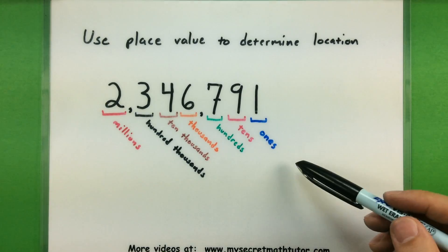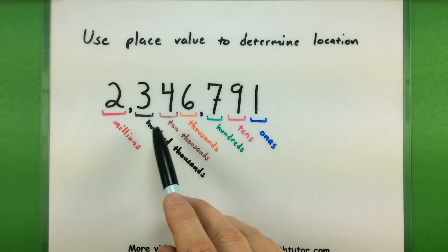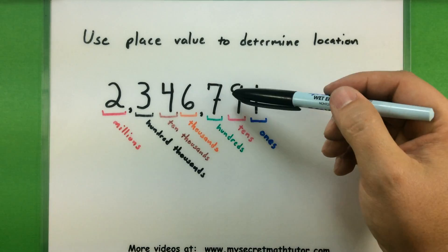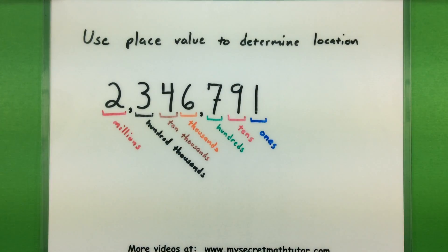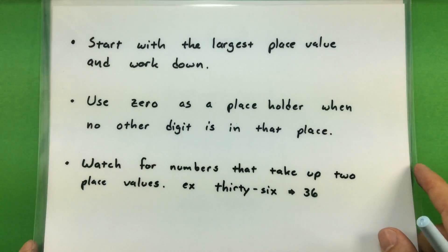So just because of where the number is located puts it in a different place value. And you'll need to know this because we'll be working the opposite direction. We'll be using these values here and saying where we should put those numbers. Now, some other good tips that will help out are these.